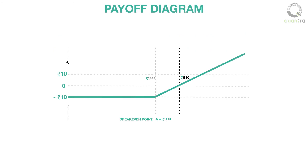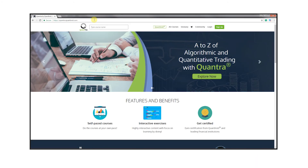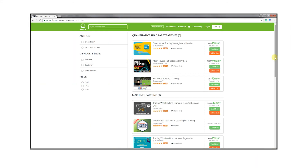Now analyze the payoff diagram of the long call and the short call. It is clear from the payoff that theoretically the call buyer has an opportunity to make huge profits as the price of the stock rises, but the call seller has his profit limited at Rs.10, that is the option premium amount.